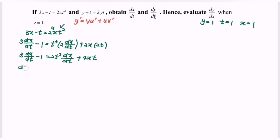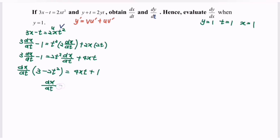Rewriting: 3·dx/dt minus 1 equals 2t²·dx/dt plus 4xt. Collecting dx/dt terms: dx/dt·(3 minus 2t²) equals 4xt plus 1. Therefore, dx/dt equals (4xt plus 1) over (3 minus 2t²).